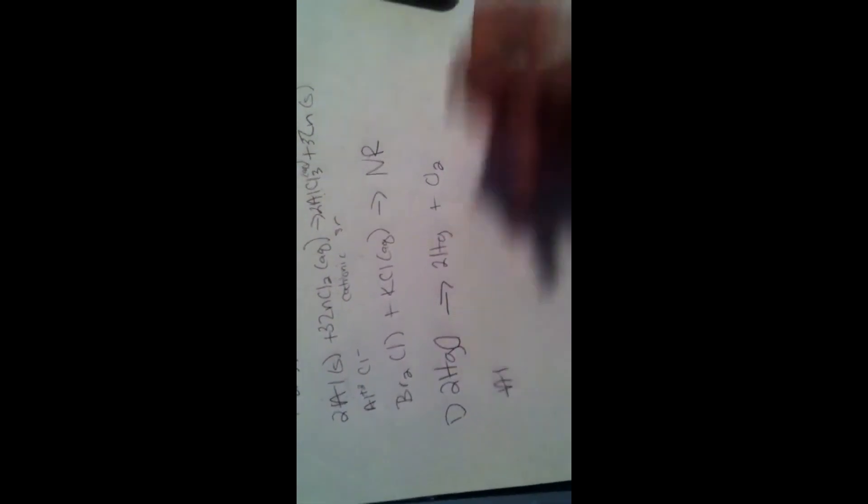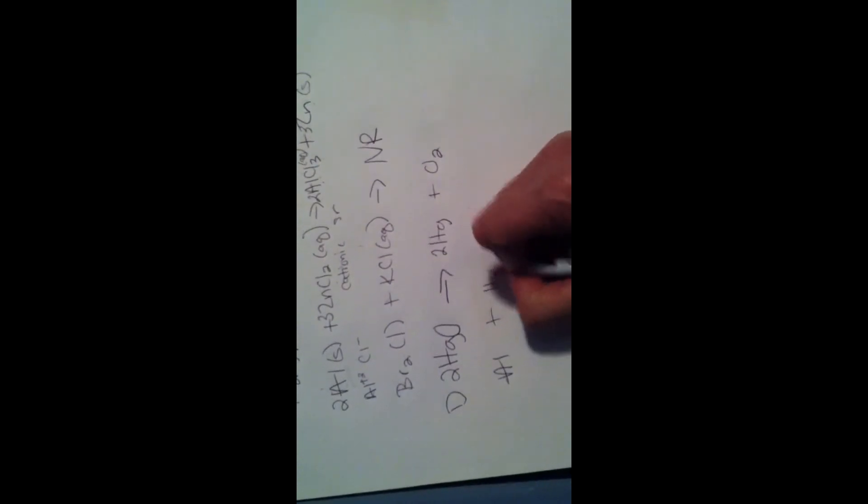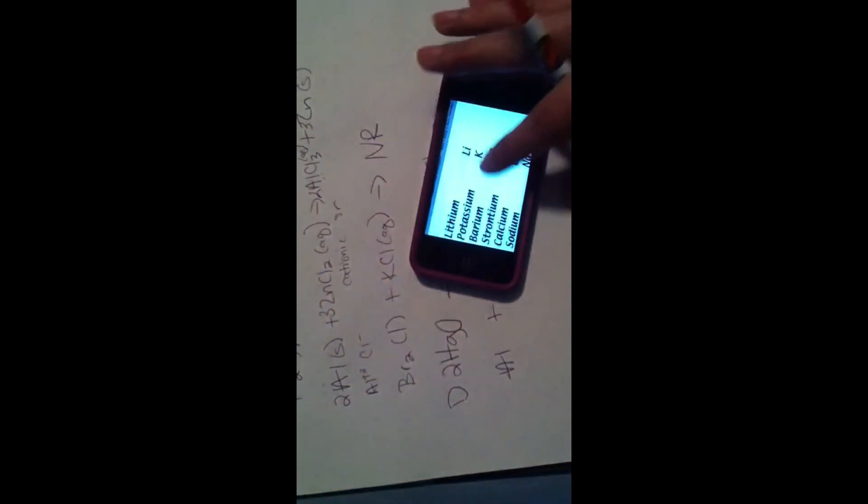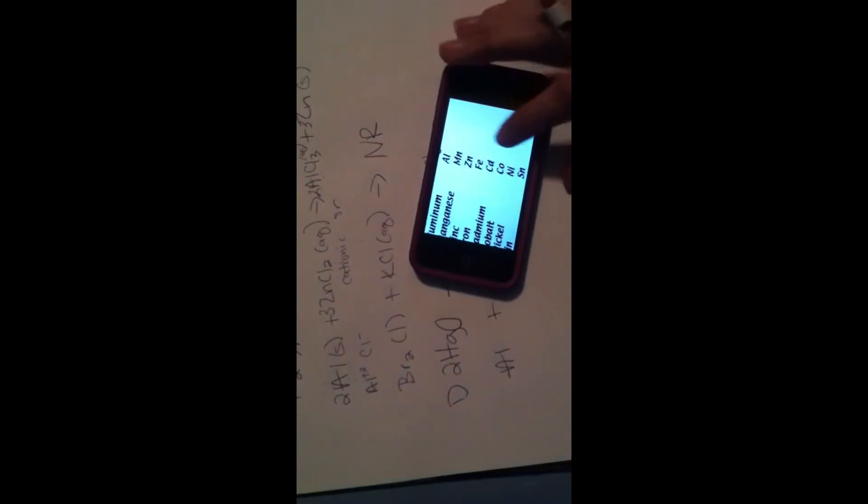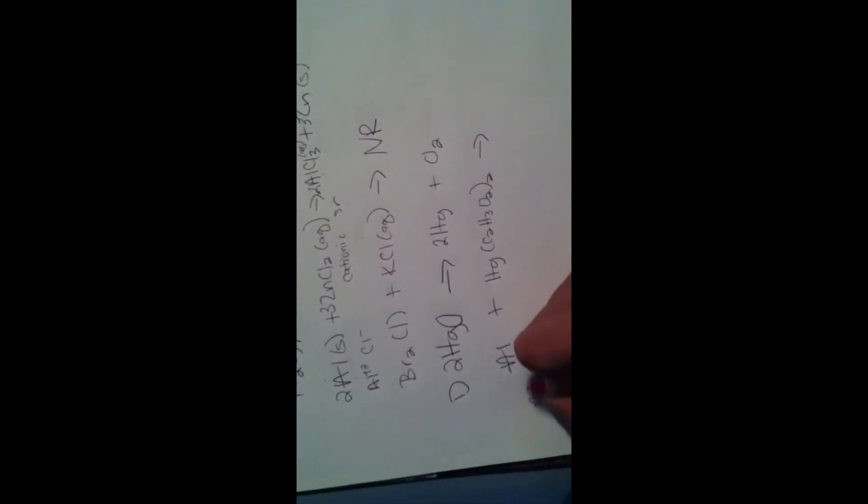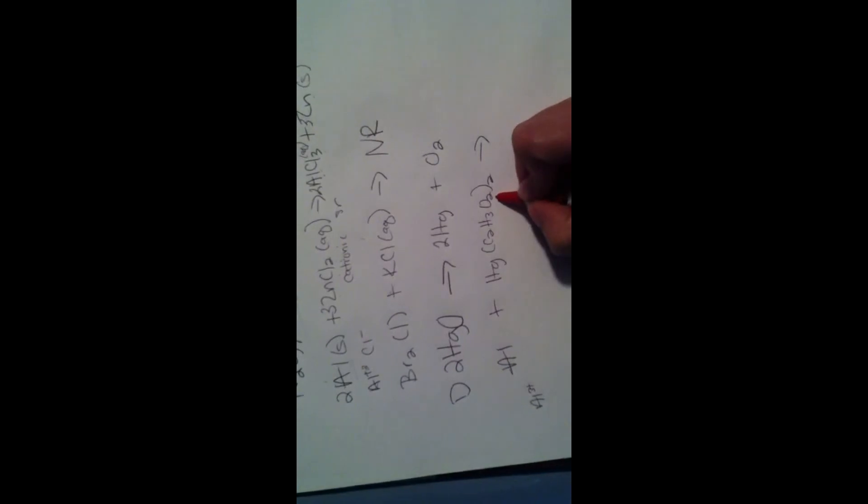And my next one, number 12. I have aluminum plus mercury acetate. I'm looking for a single replacement reaction here because I can see that this is going to have to kick somebody out. So I'm looking to see if aluminum is going to be able to replace mercury. So let's come over here. Here's aluminum. So we have mercury, it's clear down here at the bottom. So yes, aluminum can definitely kick him out.